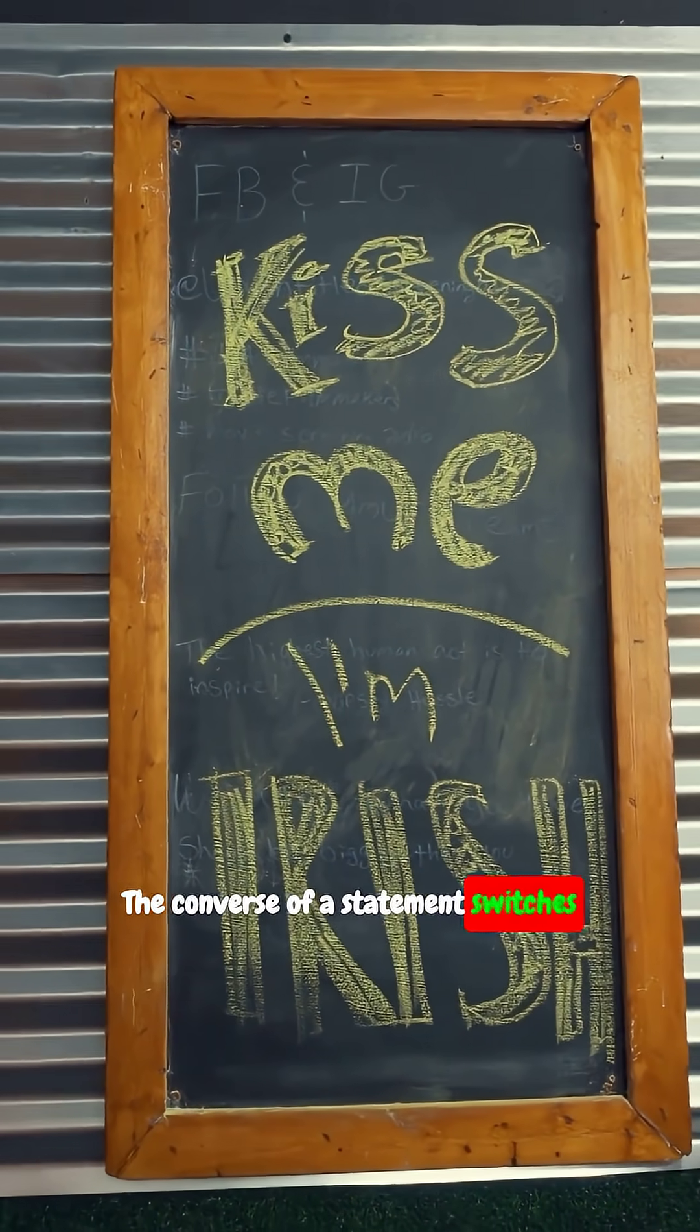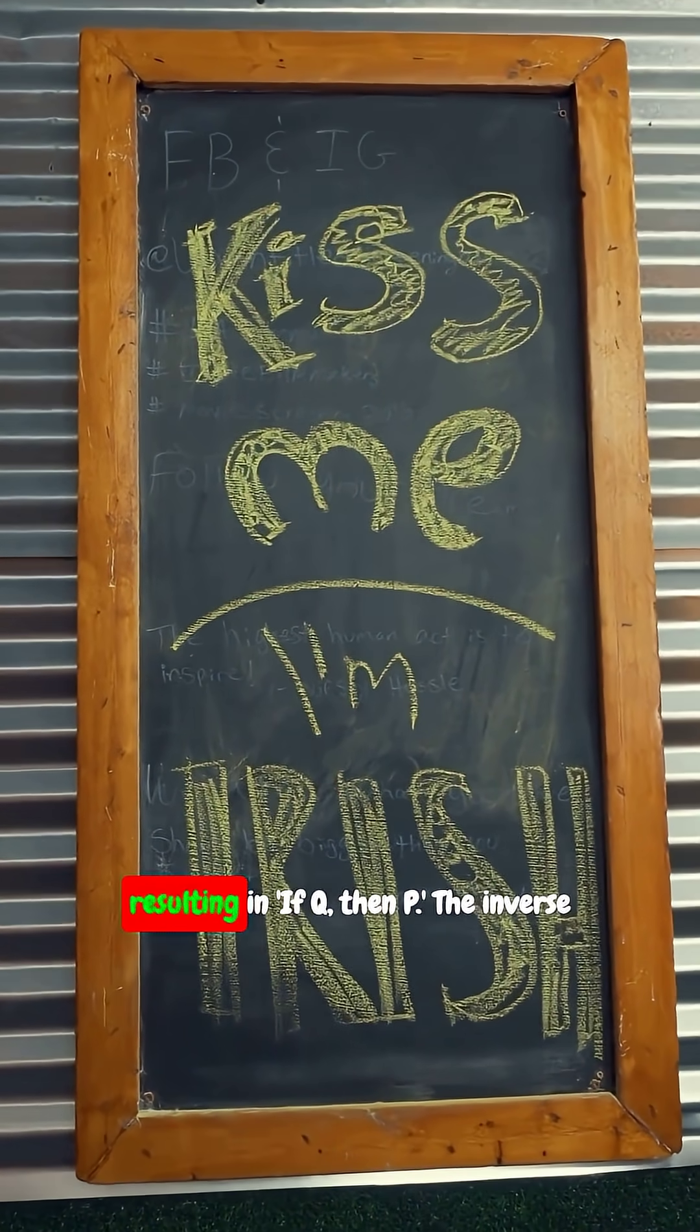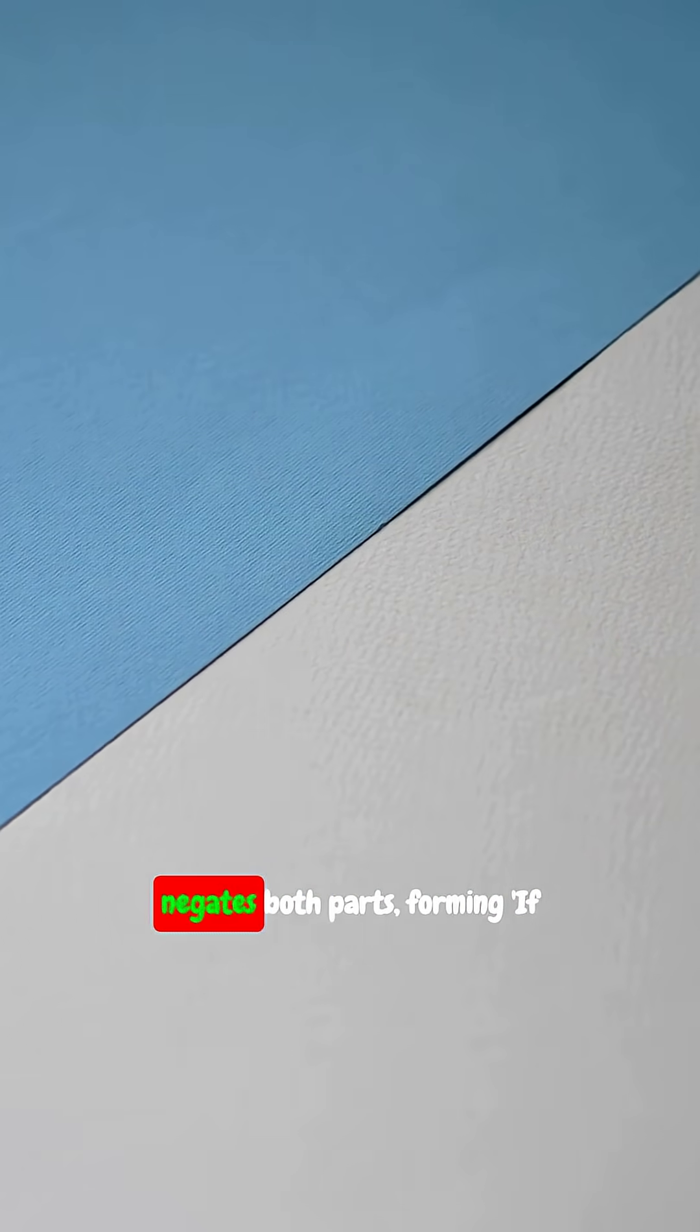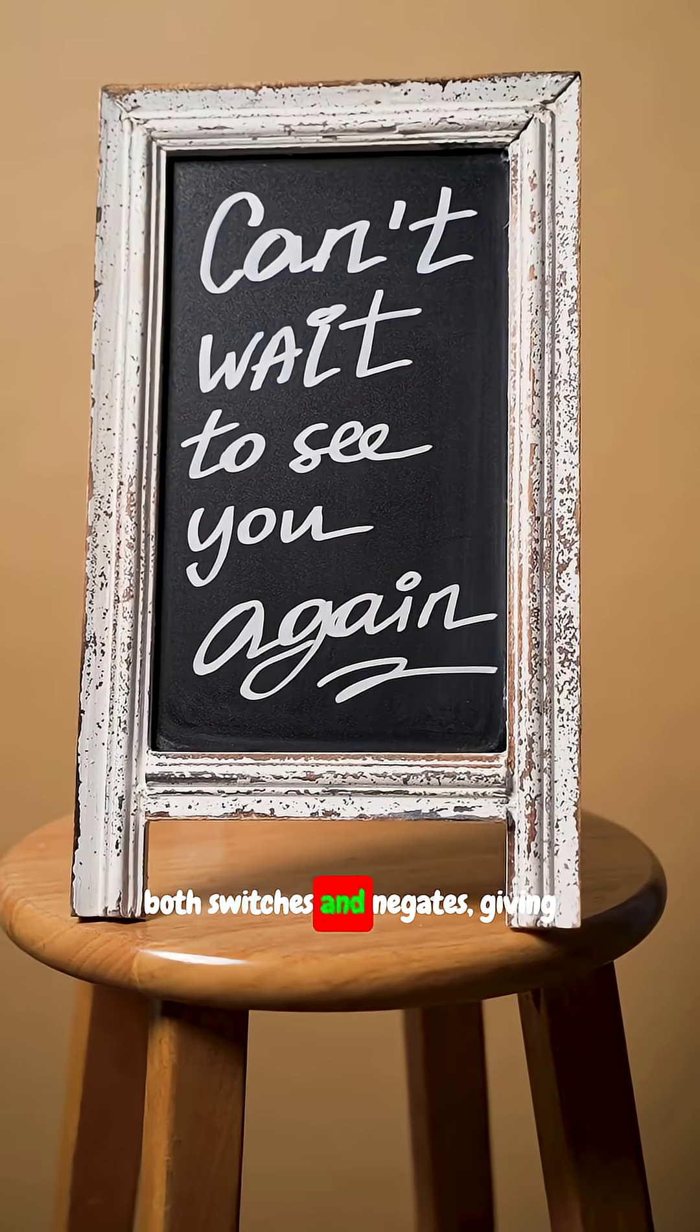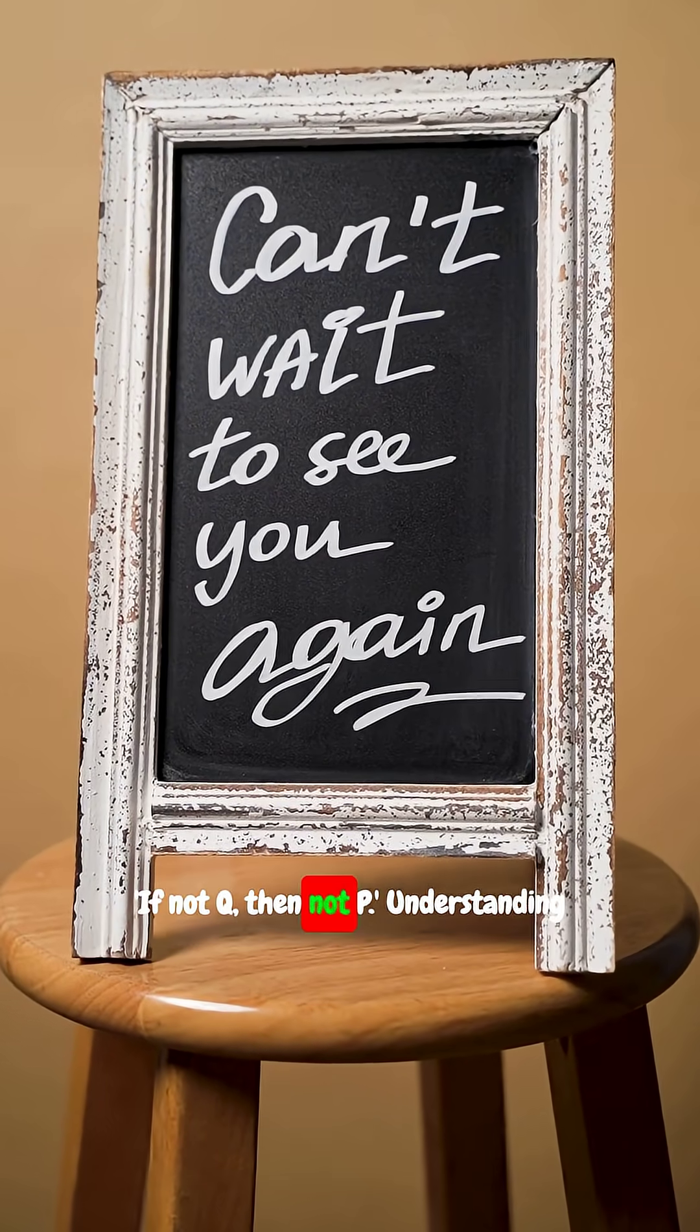The converse of a statement switches the hypothesis and conclusion, resulting in if Q then P. The inverse negates both parts, forming if not P then not Q. The contrapositive both switches and negates, giving if not Q then not P.